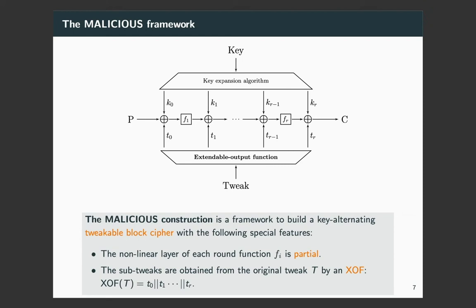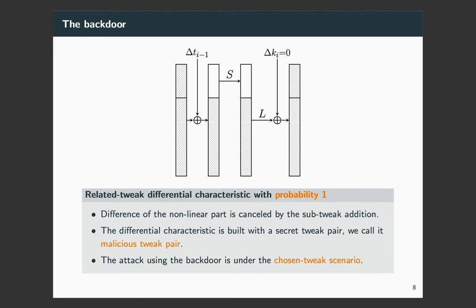Till now, you may still wonder what kind of a backdoor can be embedded inside this framework. The answer is a related tweak differential characteristic with probability 1. With the knowledge of this in an attack, one could recover the secret key in one second.